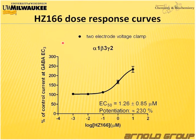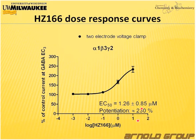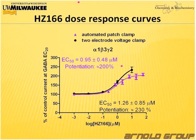In the next part of my talk I would like to show data obtained using a positive modulator, HZ166, which is based on the benzodiazepine scaffold. This assay was carried out at GABA EC3 concentration with an increasing amount of positive modulator, and what we see is potentiation of the initial GABA-A induced current. For the alpha-1, beta-3, gamma-2 subunit containing receptor, the manual assay finds an EC50 of 1.26 micromolar and a potentiation of 230%, and our automated assay finds a very similar EC50 and potentiation. In this case, the automated and the manual assay data are in agreement.